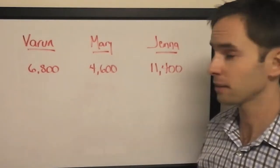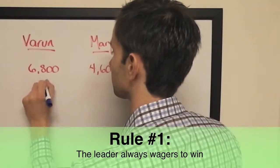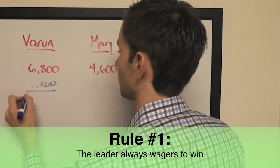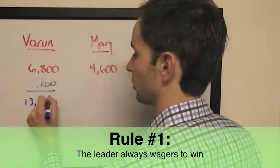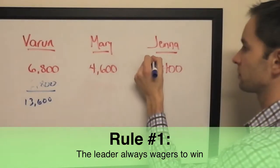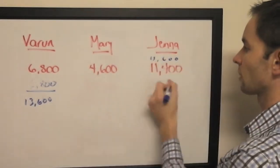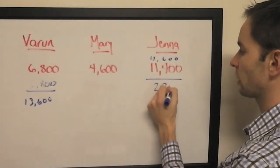We'll start with Varun and Jenna. Varun doubles up, he's going to have $13,600. Therefore, Jenna will want to wager at least $2,200.